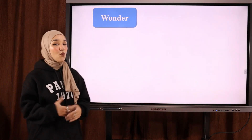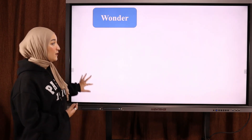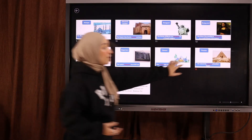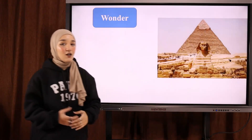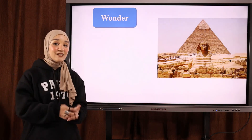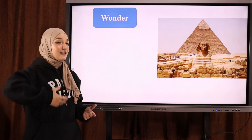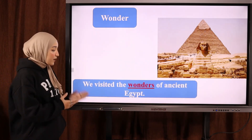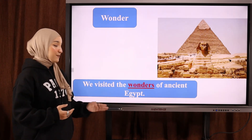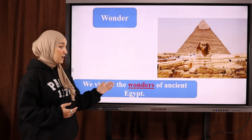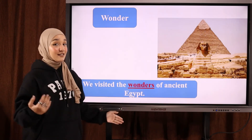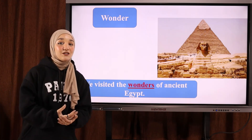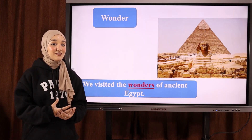The next word is 'wonder' — or 'wonders' when we talk about world wonders. A world wonder is أعجوبة — a famous landmark from ancient history. Example: 'We visited the wonders of ancient Egypt.' World wonders are ancient famous landmarks.